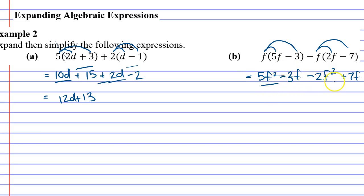5f squared and negative 2f squared are like terms. 5 minus 2 is 3, so it's 3f squared. And then we've got the like terms negative 3f and positive 7f. Negative 3 plus 7 is 4, I've bumped a button as I have several times. Negative 3 plus 7 is positive 4, and we write f next to it.